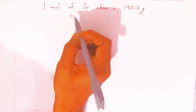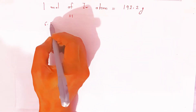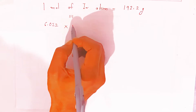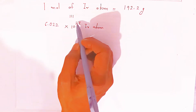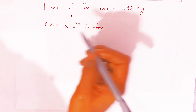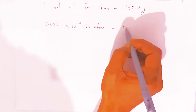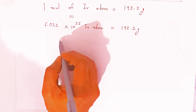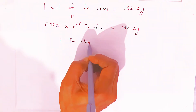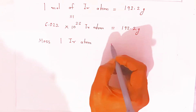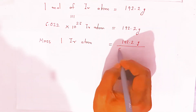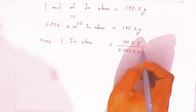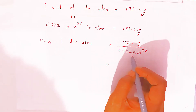1 mole of iridium equals 6.022 × 10²³ iridium atoms, and this weighs 192.2 gram. So the weight of 1 iridium atom = 192.2 / (6.022 × 10²³). Now how do you divide this? You can write 192.2 as 1.922 × 10², then divide.